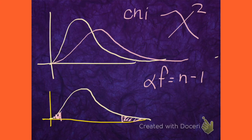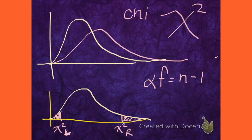It's not symmetric. So, we're going to have a chi-squared left and we're going to have a chi-squared right. That's going to correspond to the areas in the tails. So let's look and see how to find chi-left and chi-right.